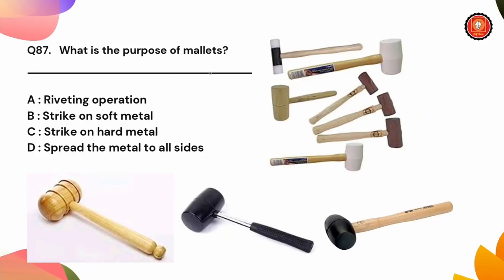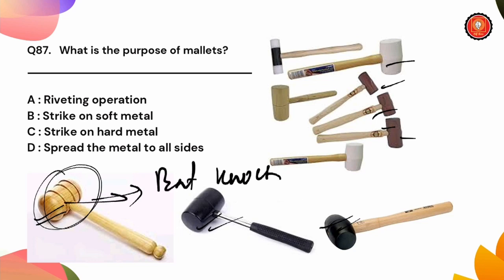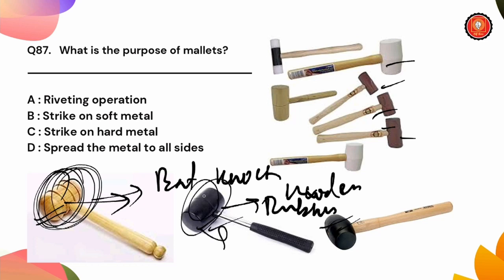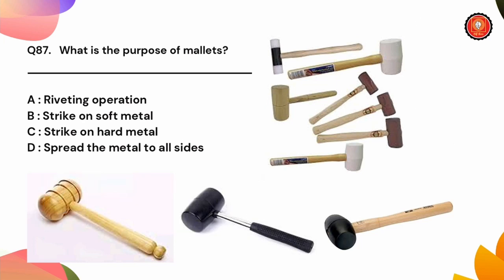Next question is what is the purpose of mallets? Options are riveting operations, strike on soft metal, strike on hard metal, or spread the metal to all sides. Normally we use a wooden hammer, not made of iron, so the work piece is not damaged.